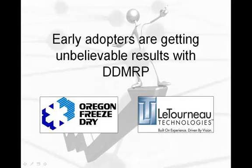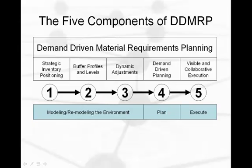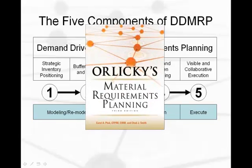Early adopters are getting staggering results — watch the video Fixing the Planning Problem to see them. To get your environment to DDMRP, a process has to be followed. The process is robust, innovative, and intuitive, and is detailed in the new Orlicky's Material Requirements Planning. There are five sequential components.